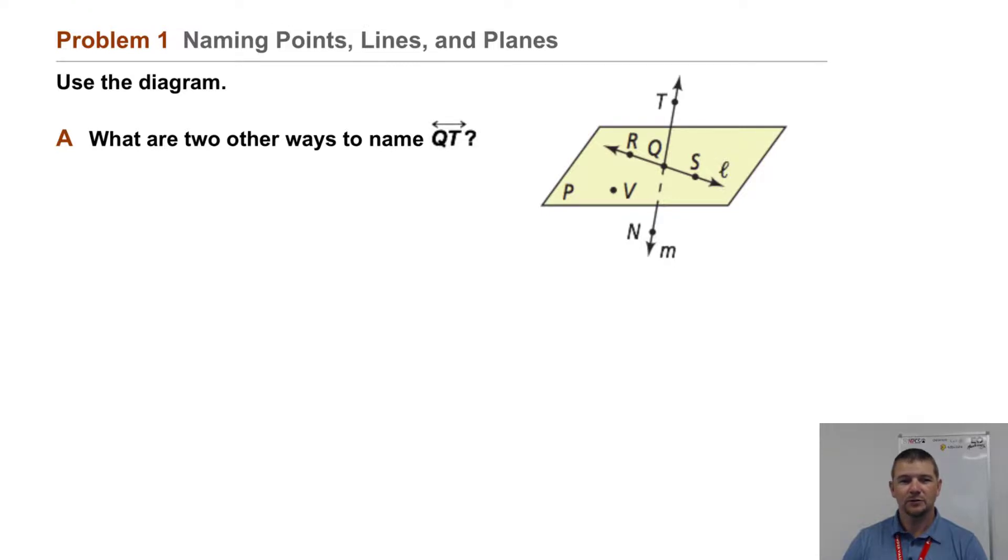Part B: what are two other ways to name plane P? Well, two other ways to name plane P are plane RQV, three points in the plane, and plane RSV, a different collection of three points in the plane.